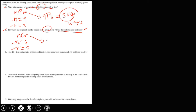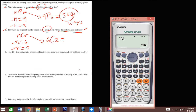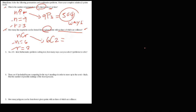Substituting these values, we get 6C2. Using the calculator, 6 nCr 2 gives us 15. Therefore, there are 15 ways to form line segments.